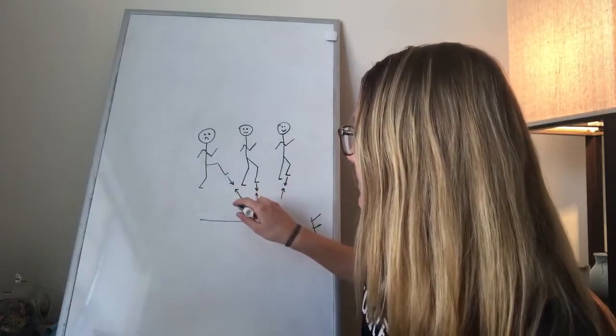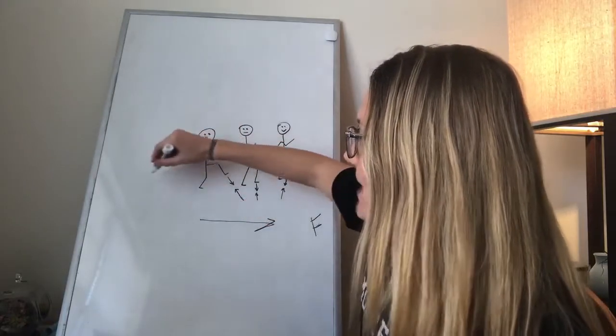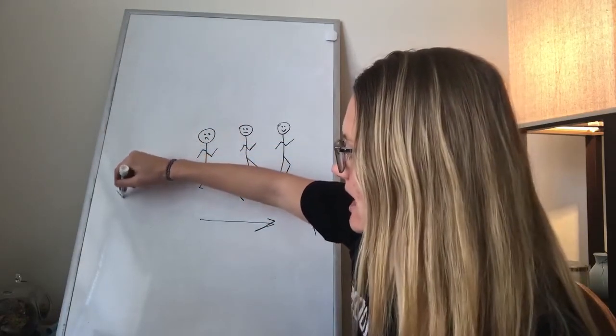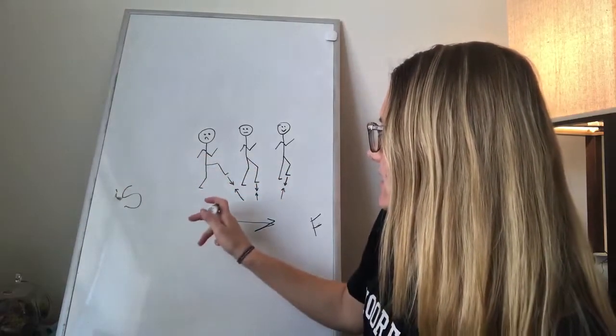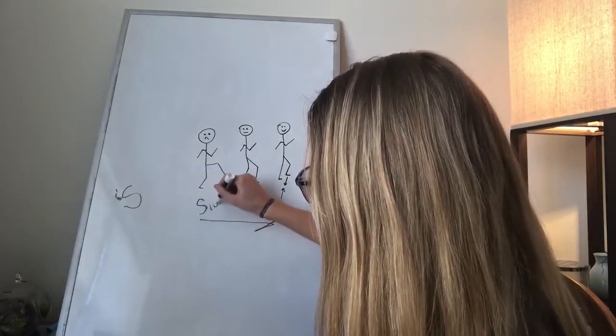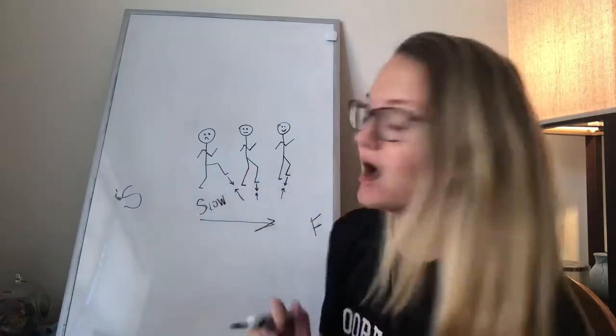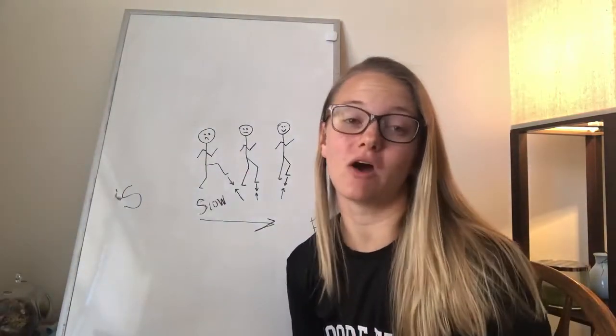So this guy, every single time, because he's putting his foot down here, the force is pushing him back towards the starting line. This is the starting line over here. And it's essentially slowing him down.